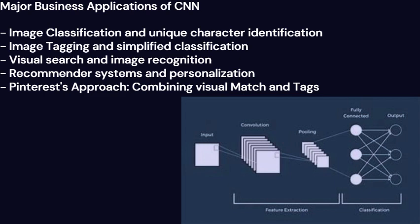This article explores how CNNs use supervised machine learning algorithms for image classification, image tagging, visual search, and recommender systems, revolutionizing industries like e-commerce and social media.